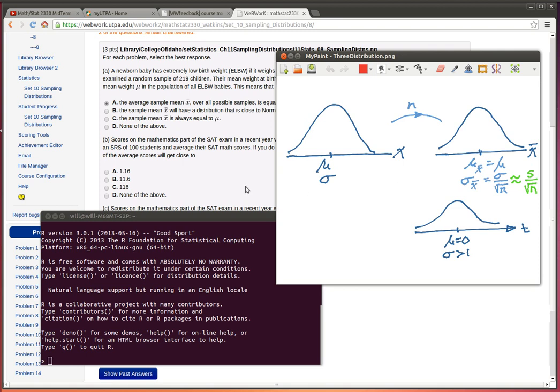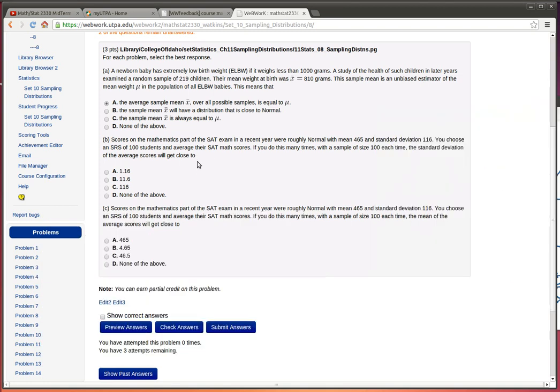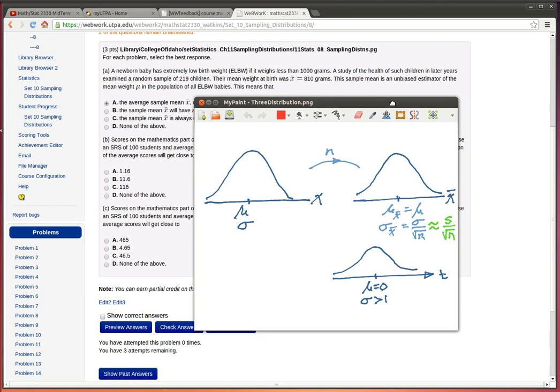Let's look at some problems here. These problems are actually asking us for understanding about these three distributions. Here's the first problem: we're looking at some extremely low birth weight children and their health years later on. We look at a random sample of 219 children. Now how does that fit into this particular picture here? The point is that we've got a sample of 219 children, so that means that our n is 219.